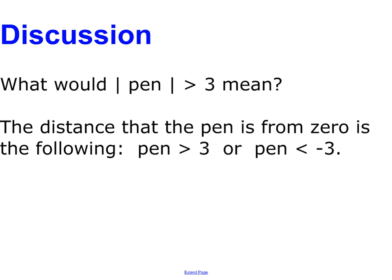What would the absolute value of pen greater than 3 mean? All that means is that the distance from the pen to 0, or how far the pen is from the starting point 0, pen has to be greater than 3 away, or it's got to be less than negative 3 away. Because if we take the absolute value of that, it's going to be greater than 3. So it either has to be 4 steps away from 0 or negative 4 steps away from 0. We can't have negative distance, but we could say going to the right 4 steps and going to the left 4 steps.